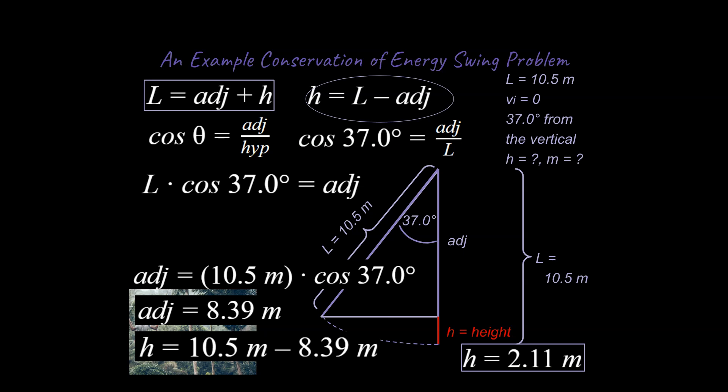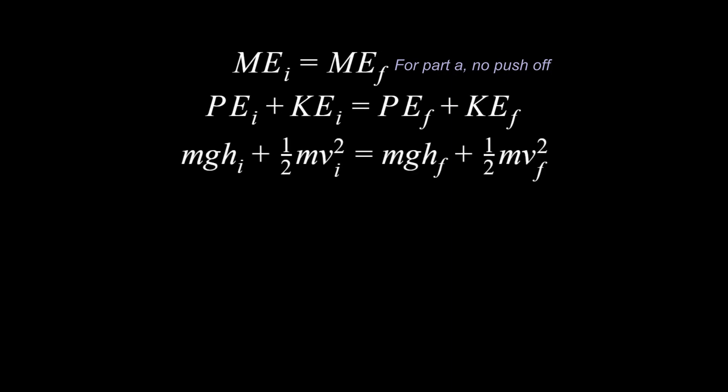Then the rest of the problem is like a traditional conservation of energy problem. So what we're going to do then is just some algebra. We start by writing out this equation here. Mechanical energy initial is equal to mechanical energy final. Some people skip this step right here, and they jump right into this step right here. So this is potential plus kinetic initial is equal to potential plus kinetic final. And you can write out the equation. And really crucially at this point, it's important to start asking yourself, what is zero?